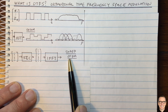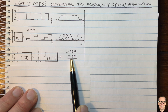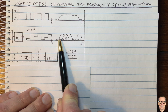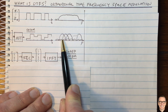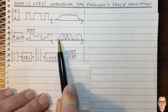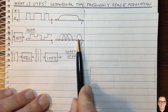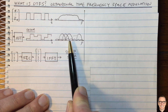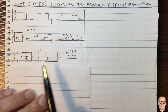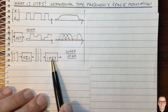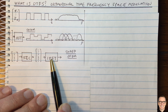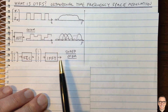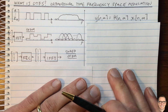A time-varying channel causes Doppler spread, which means the subchannels come out wider and are no longer orthogonal. So we want to think about a different modulation format with a different transform that can cope with that scenario — that is the motivation for OTFS. But first it helps to look at the equation for OFDM.